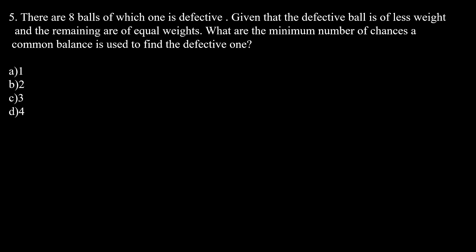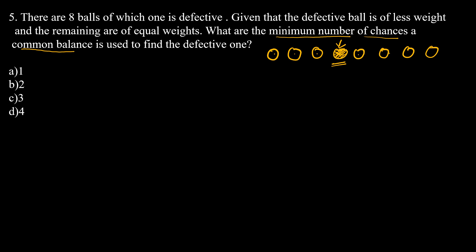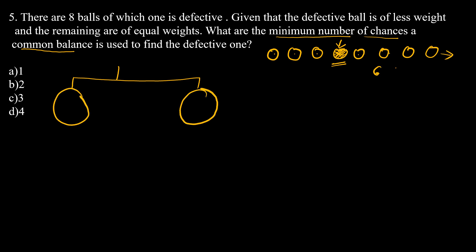Next question: there are 8 balls of which one is defective. The defective ball is of less weight and the remaining are of equal weight. What is the minimum number of chances a common balance is used to find the defective one? We have 8 balls, out of which one is defective. We use a common balance. First, we take 6 balls and keep 3 balls on each side of the balance.